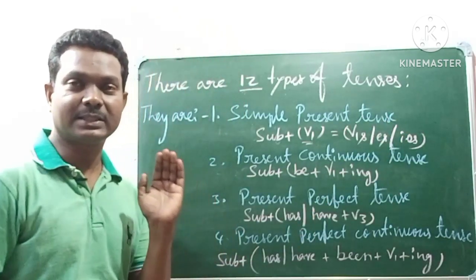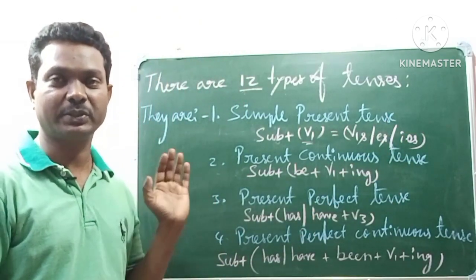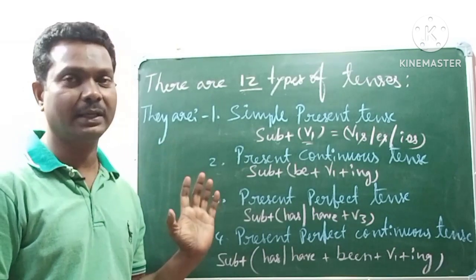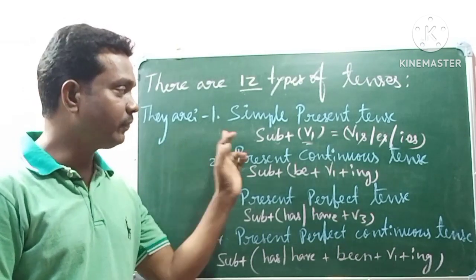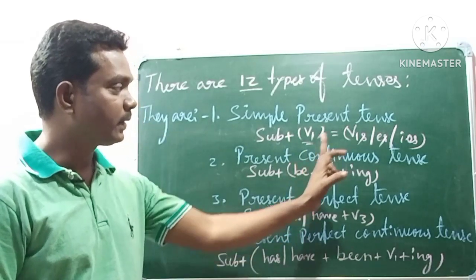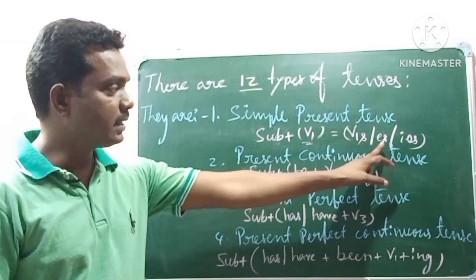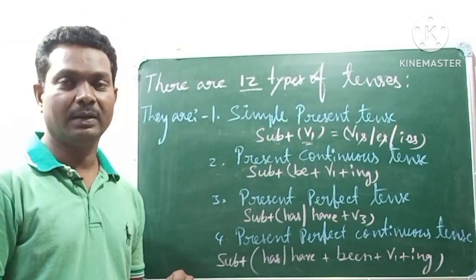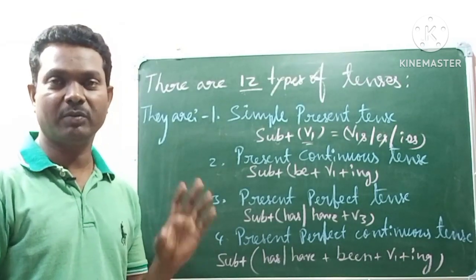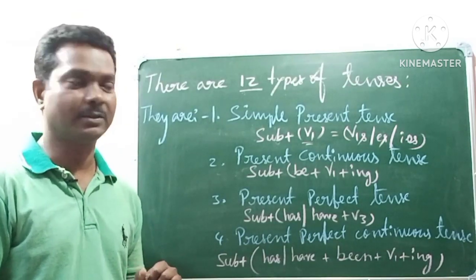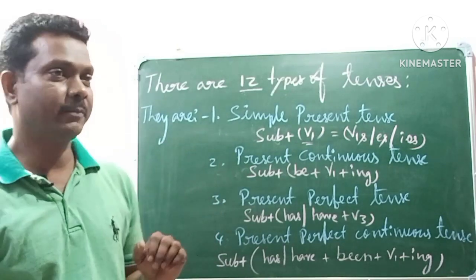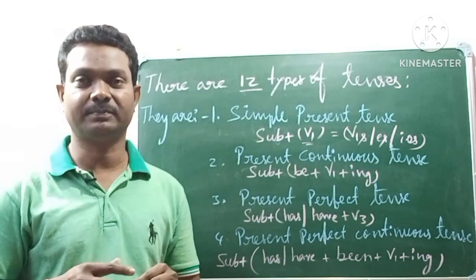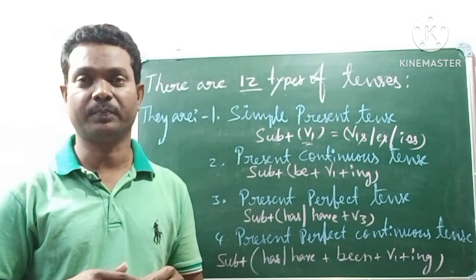For third person singular subjects, there is a special rule: we add 's' or 'es' to the verb. That is the general rule for third person singular. We discussed this in the last class already. So this is simple present tense — used in a general way when we speak about regular habits in daily life.